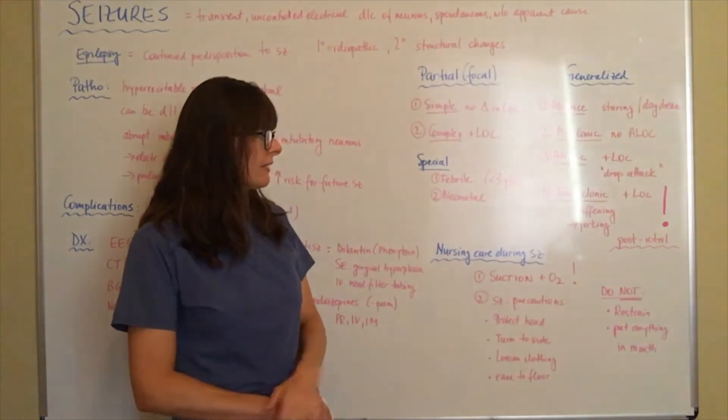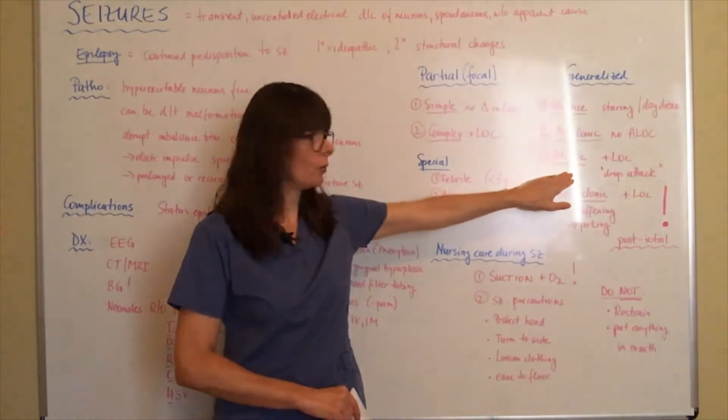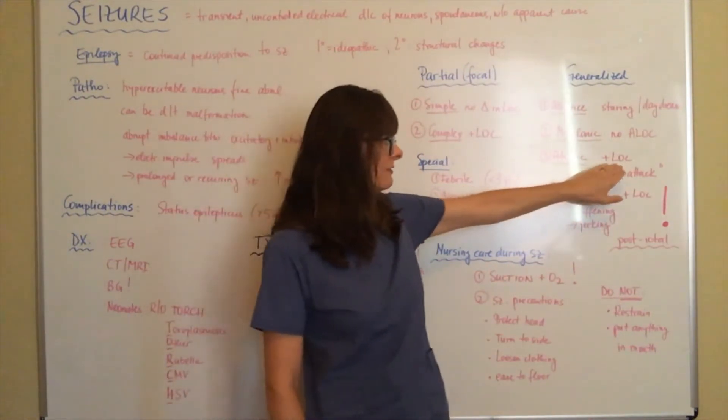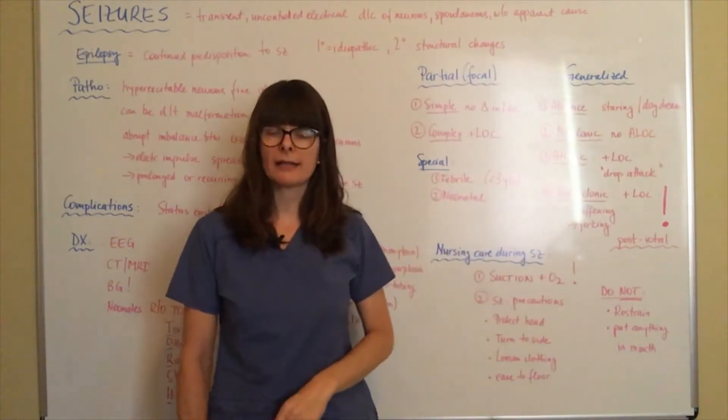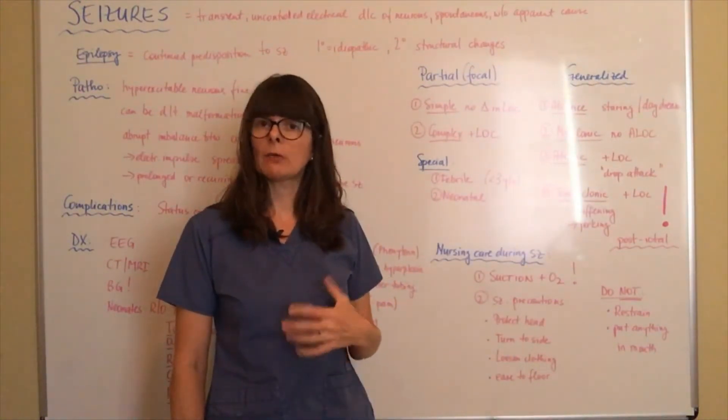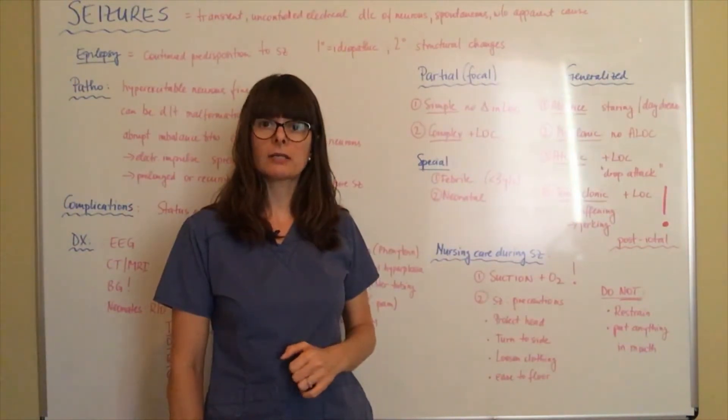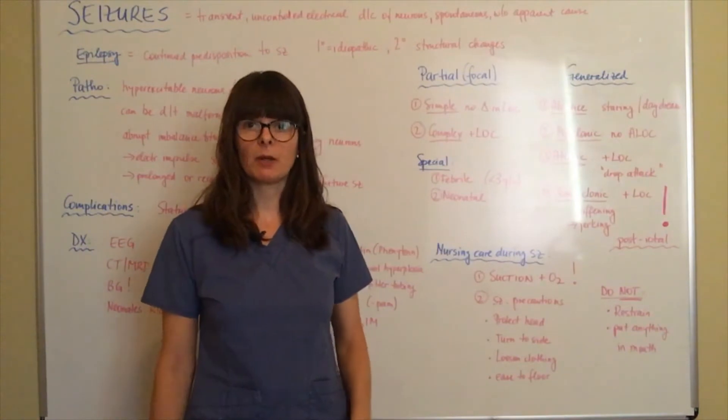Then we have atonic seizures. Atonic basically meaning without tone. The patient will have an alteration in mental status, and they're also called drop attacks. These are all of a sudden, they become completely atonic. They just kind of drop to the ground because their body is just not responding at all.